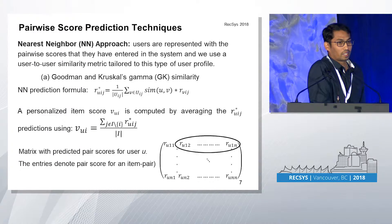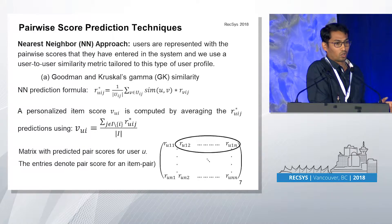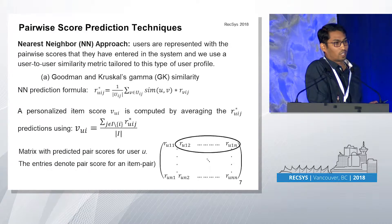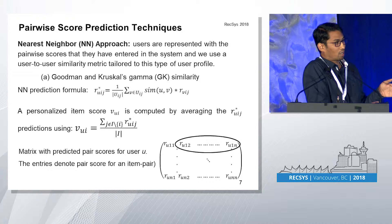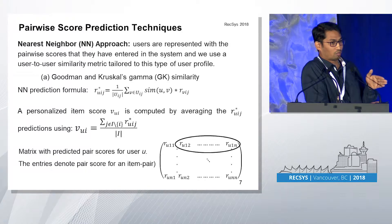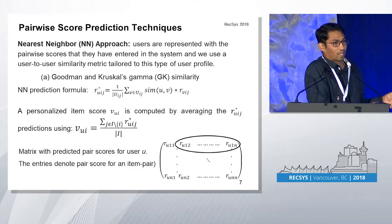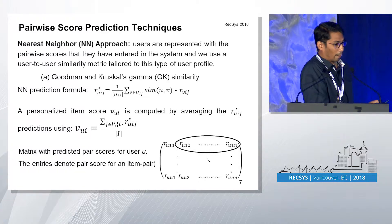We predict the missing comparisons, then aggregate them to get a personalized ranking. For each item, we average the predictions against the rest of the items to give a score, and using this score we rank and present the ranking list to users.